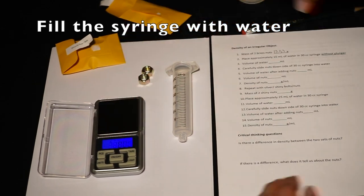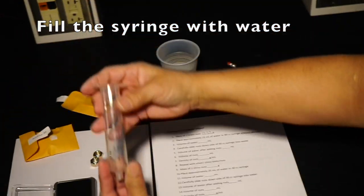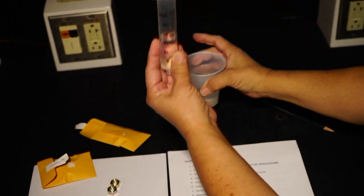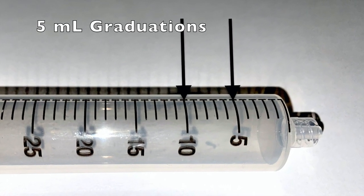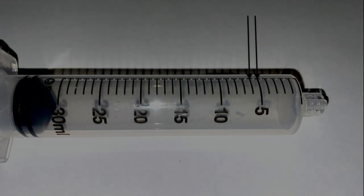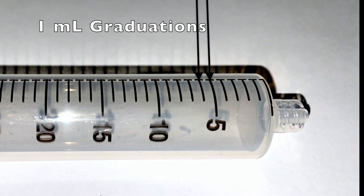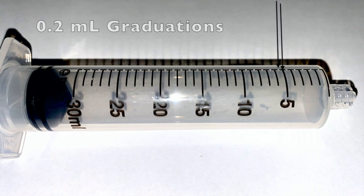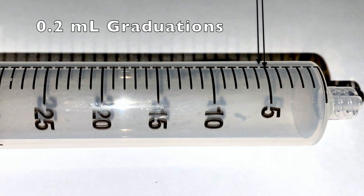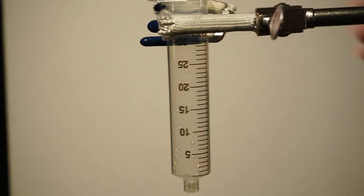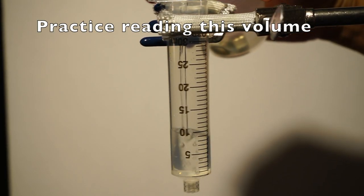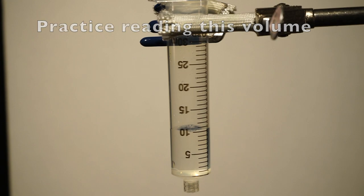Next, fill the syringe without plunger with water. Remember to read the graduations properly. The largest graduations are 5 milliliters, the small graduations are 1 milliliter, and the smallest increments are 0.2 milliliters. Practice reading these two examples.